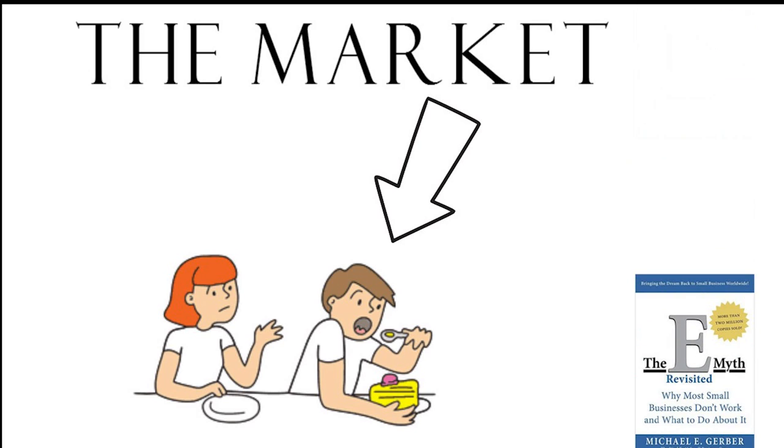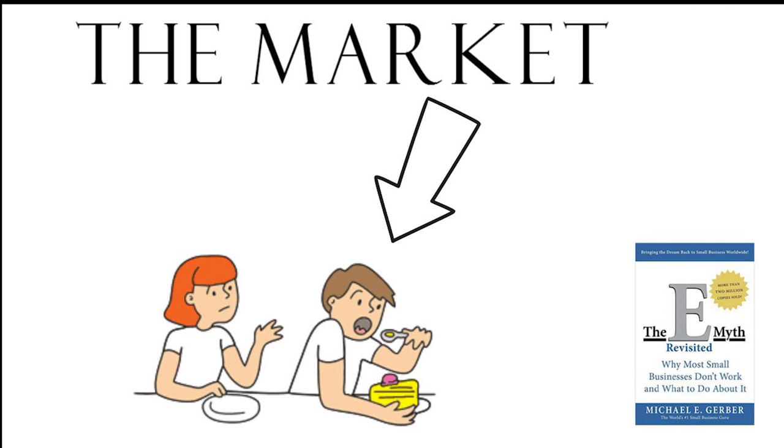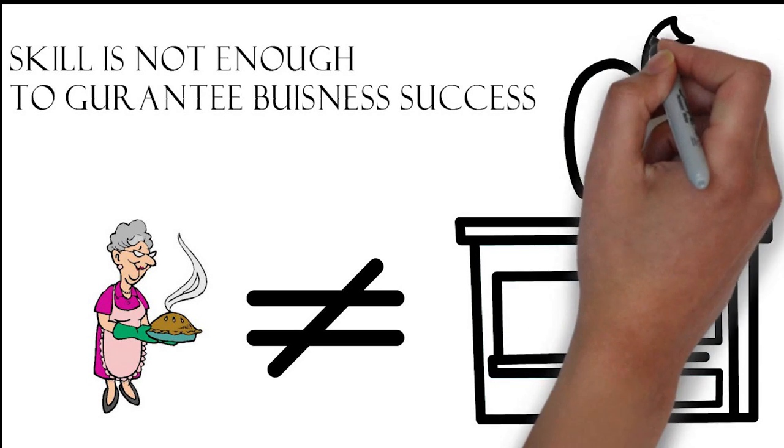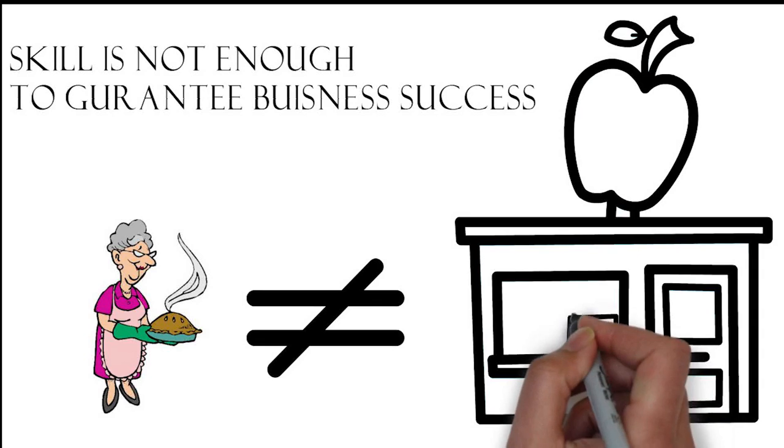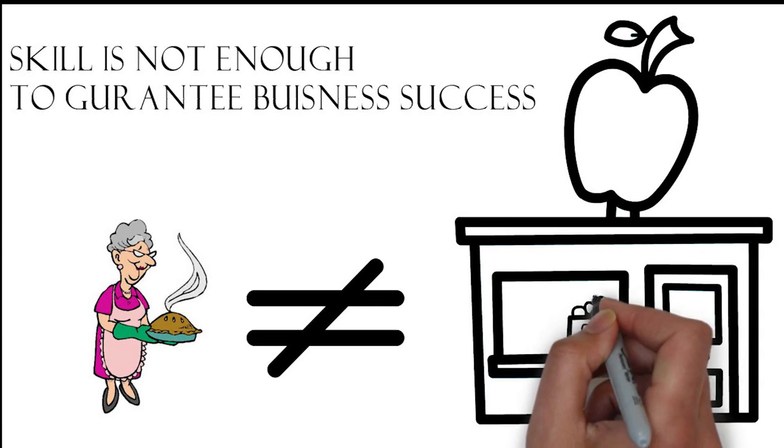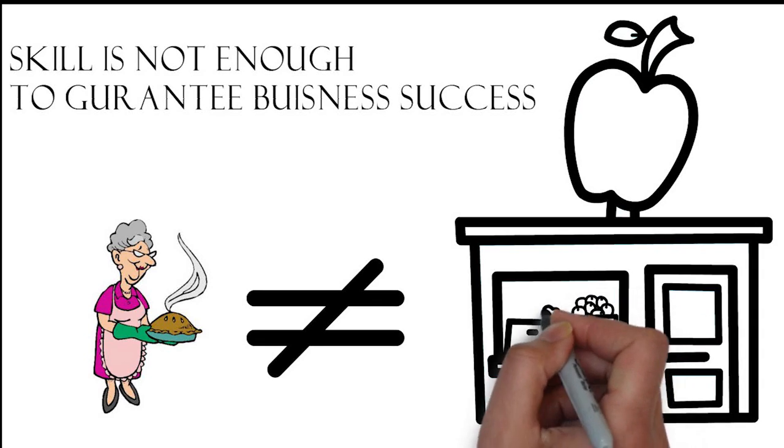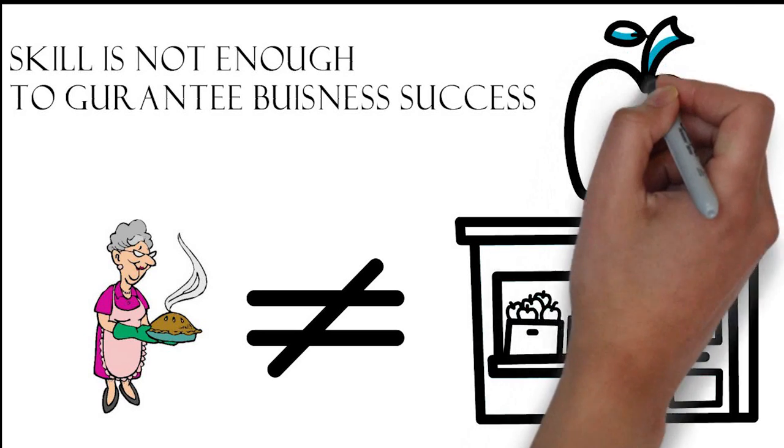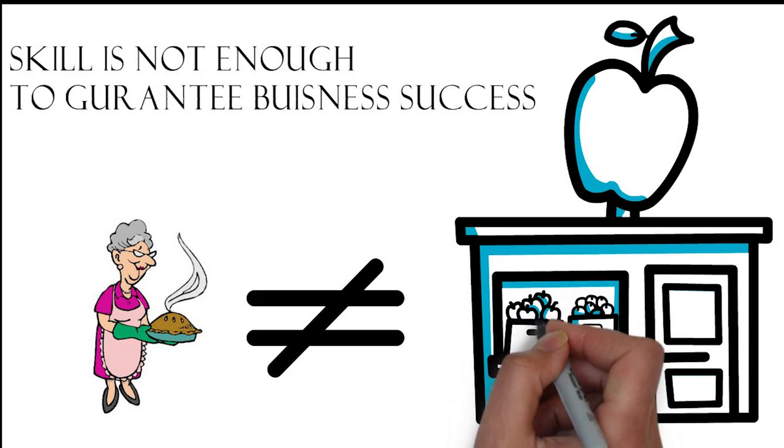A similar concept was talked about in the E-Myth Revisited. Just because you know how to do something doesn't mean you should revolve your business around that thing. The skills needed to make your famous apple pie recipe are not the skills needed to run an apple pie business. They're two completely different things. Running a business, being an entrepreneur is a different skill set to do an activity that you like to do. And there's also another side to this coin.